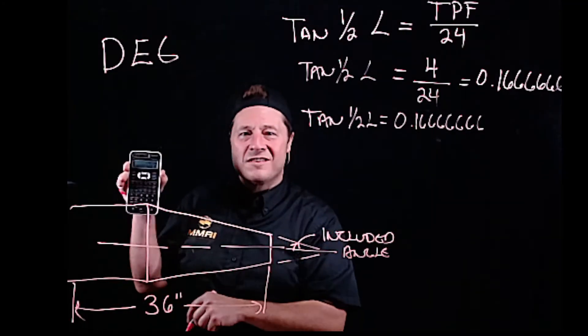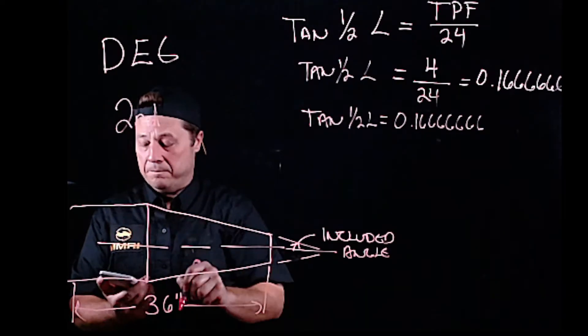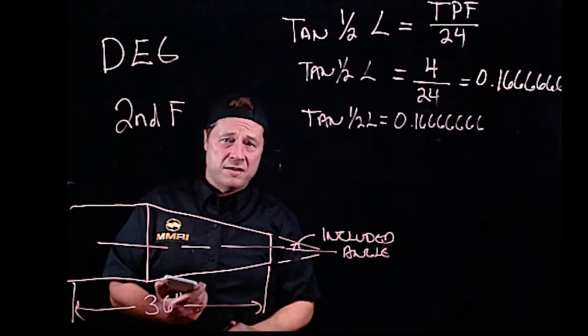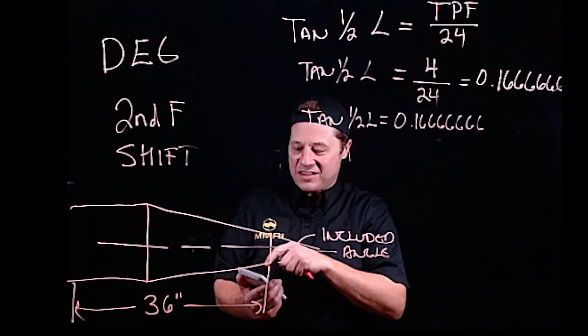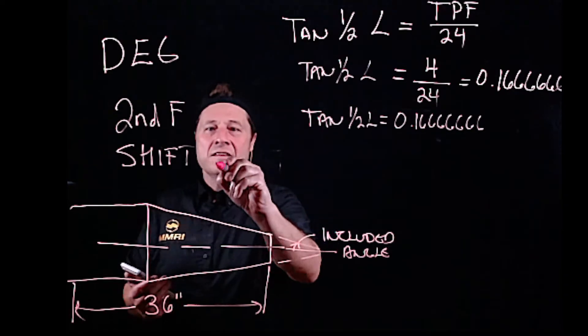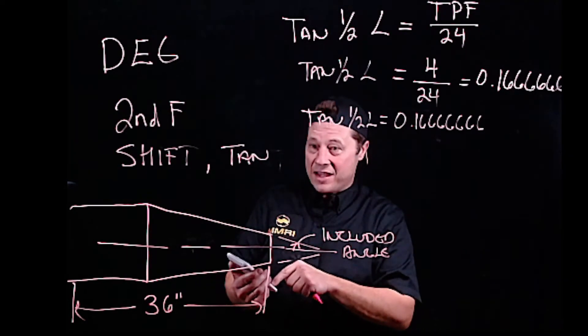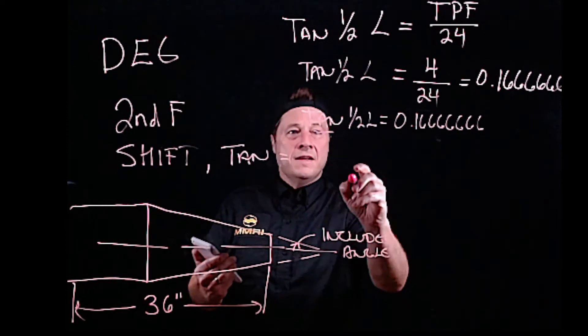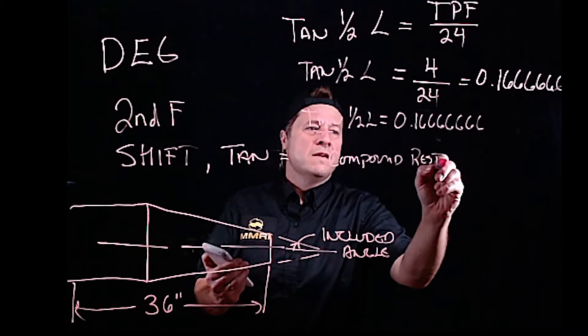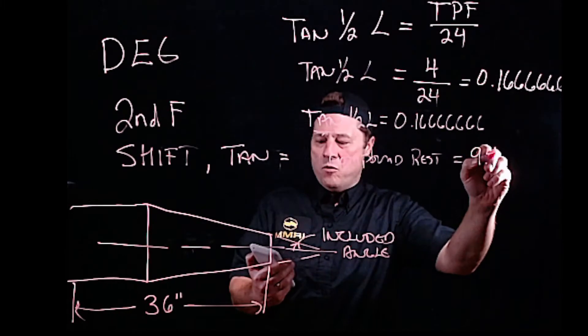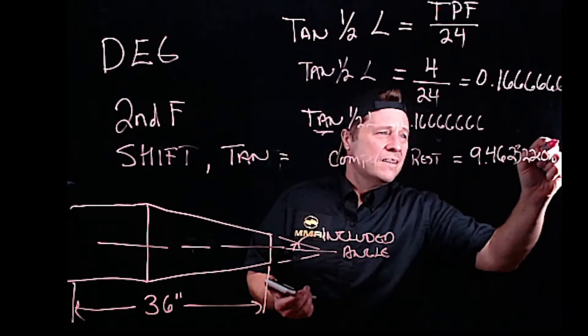Now that you have 0.1666666 et cetera in your calculator, I want you to hit the second F button. They call it a second function button, or it may just simply say shift. Hit that button, second function or shift, and then hit the tan button, and then equals. The compound rest setting is 9.46232208 degrees.